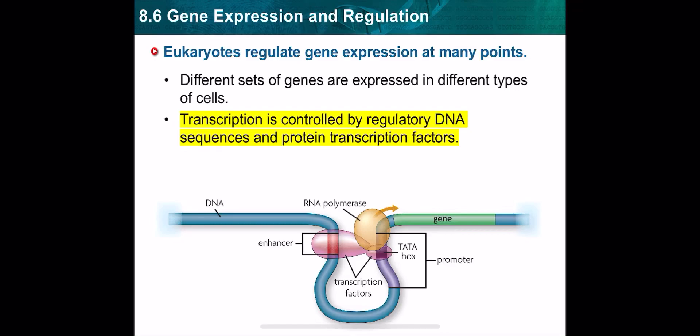Let's complete 8.6 gene expression and regulation. In the previous video we were talking about gene expression and regulation in prokaryotes. Now we're going to talk about eukaryotes — how do eukaryotes regulate gene expression? They also regulate gene expression by regulating the transcription process, because this is the first step in gene expression.